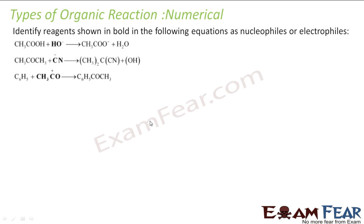So here we have to identify the reagents shown in bold in the following equations as nucleophile or electrophile. It's pretty easy actually. Nucleophiles are the ones which love nucleus. Nucleus has positive charge, so nucleophiles will have negative charge. Electrophiles are the ones which love electrons. Electrons have negative charge, so they will have positive charge. This guy has negative charge, so it is nucleophile. OH- is nucleophile, CN- again negative charge, so this is also nucleophile. This is a positive charge, so electrophile.